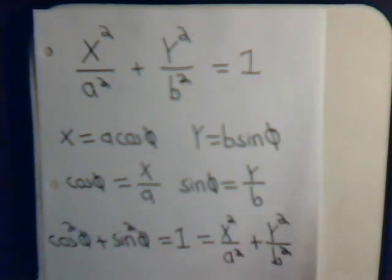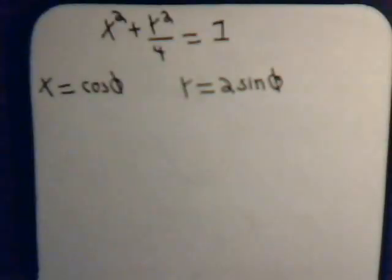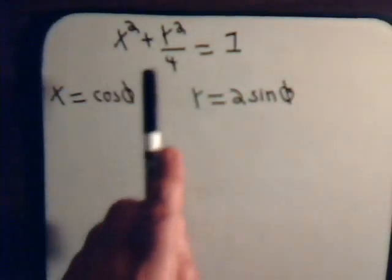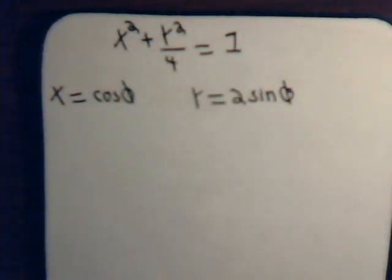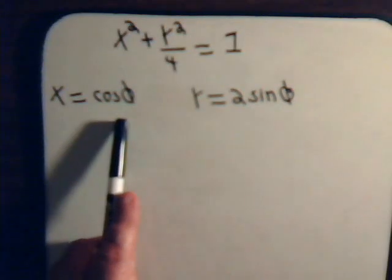In this video, let's take a simple example. Suppose we have x squared plus y squared over 4 equals 1. So a is 1, so x is just the cosine of psi, b is 2, so y equals 2 times the sine of psi.